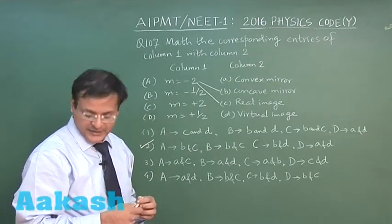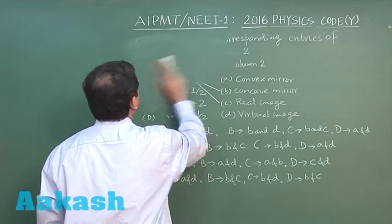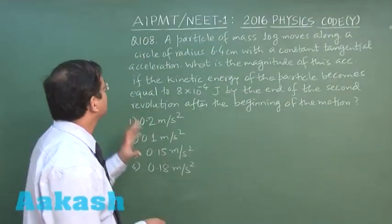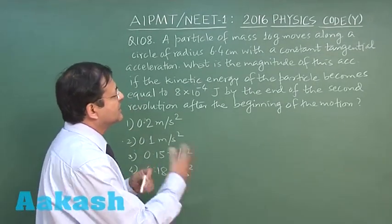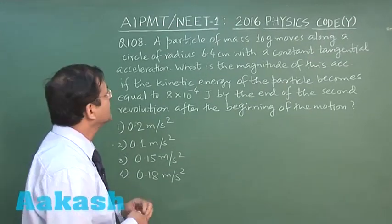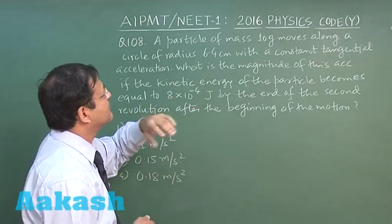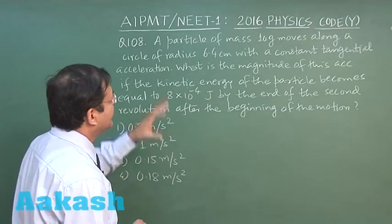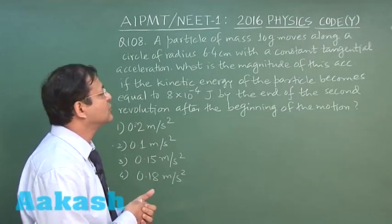Let us switch over to question 108. In this question which is based on circular motion, but still you can use the equation of linear motion. It says that a particle of mass 10 gram moves along a circle of radius r. Mass is given, radius is given and it is moving with constant tangential acceleration.